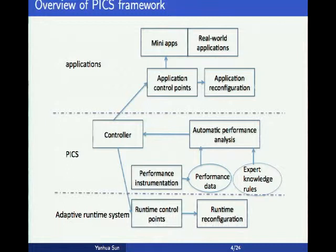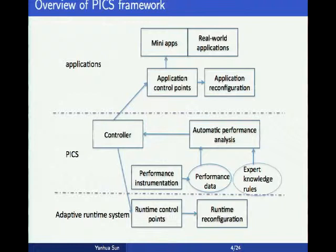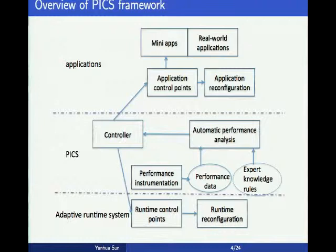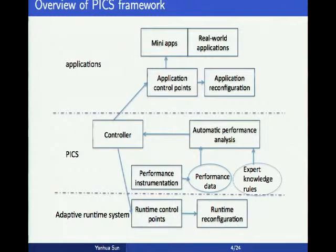Once we have performance data and expert knowledge rules, we use them to perform automatic analysis. The result of the analysis correlates performance with control points that can potentially fix the problems. Based on this result, the control point picks up better values to improve performance. This new configuration is fed back to the application and runtime so they can adapt to use the new configurations.